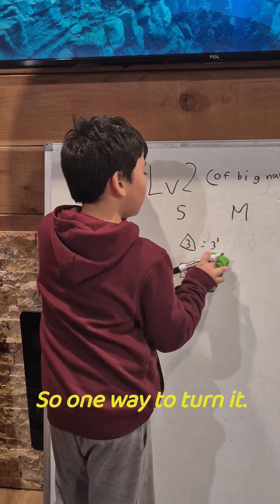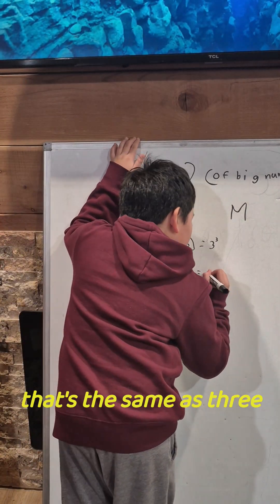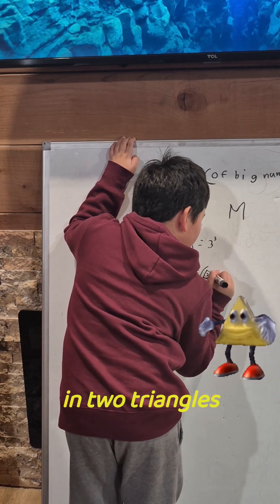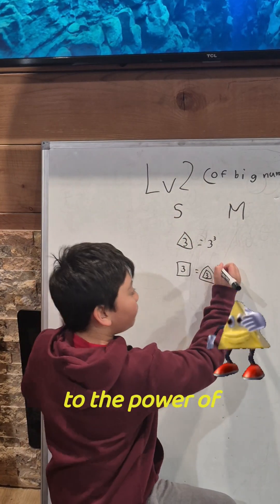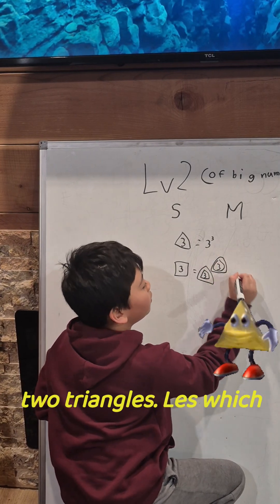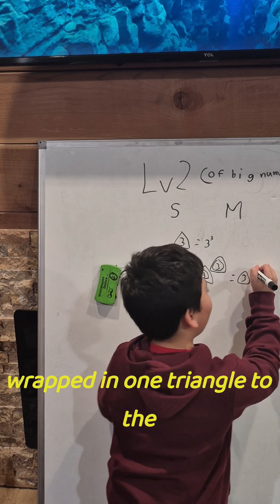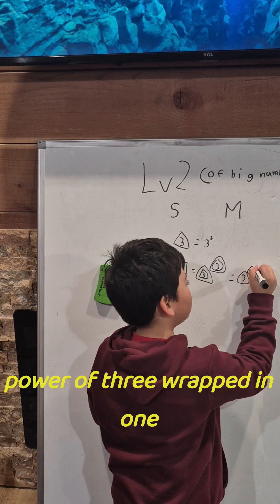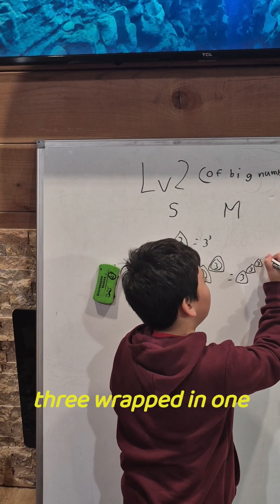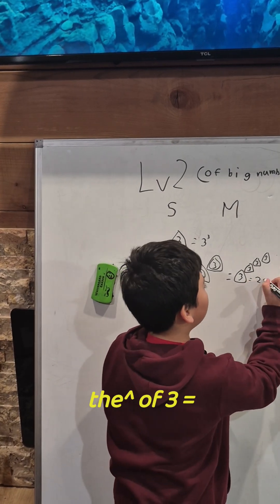One way to evaluate this is: 3 wrapped in 2 triangles, to the power of 3 wrapped in 2 triangles. Which is the same as 3 wrapped in 1 triangle to the power of 3 wrapped in 1 triangle, to the power of 3 wrapped in 1 triangle, to the power of 3 wrapped in 1 triangle. And 3 to the power of 3 equals 27.